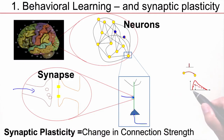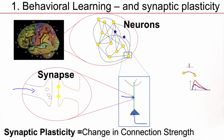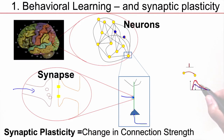This response can be measured — it has a certain amplitude. Synaptic plasticity means that when you learn new things, when something happens, the response can change in size and become much bigger. The amplitude of the response is a measure of the strength of the synaptic connection, a measure of the synaptic weight.